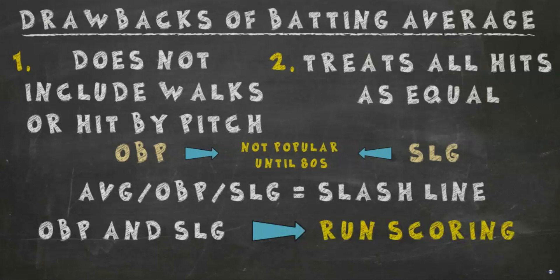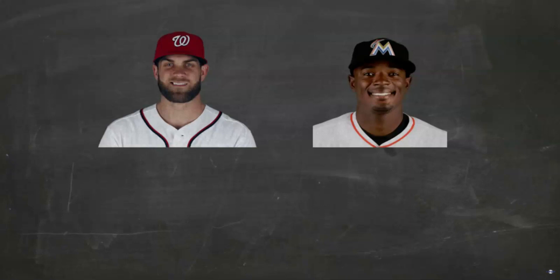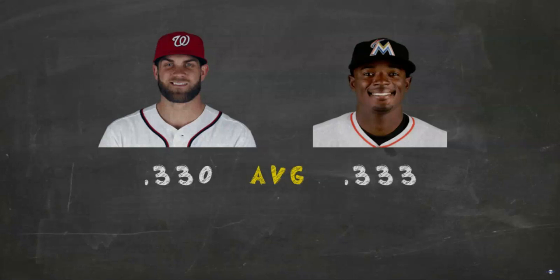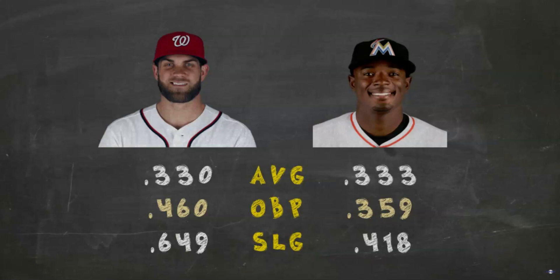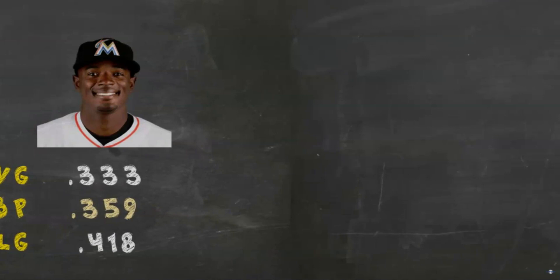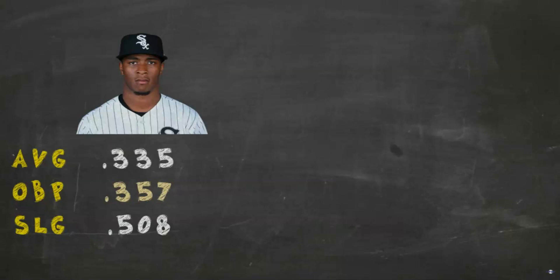On-base percentage and slugging percentage are more correlated to scoring runs and are therefore seen as better offensive evaluators. To show what this means, here are Bryce Harper and Dee Gordon in 2015. Gordon was the NL batting champ with a .333 average, and Harper batted .330. Batting average would tell us they are similarly valuable, but throw in on-base percentage and slugging and you'll see Harper is far and away the more valuable player — hence why he won NL MVP that year. Even if there is a larger gap in batting average, the value can vary drastically. Here are 2019 stats for batting champ Tim Anderson, Mike Trout, who would win AL MVP, and Hanser Alberto. Again, batting average doesn't tell the whole story.